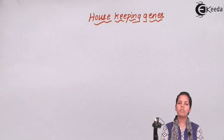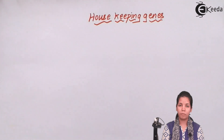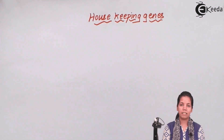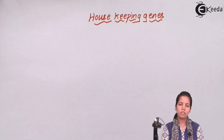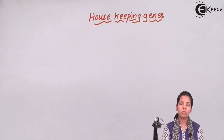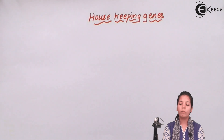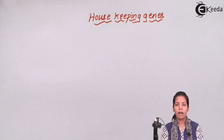Is it necessary that every gene present in your body has to be expressed? Not really. Some genes are just present but never expressed in your lifetime. One example is oncogenes — genes that can lead to cancer — they are present in your body but never expressed. However, certain genes which are present in your body will always be expressed, such as hormone genes and protein-forming genes. Genes which are always expressed in your body are termed housekeeping genes.